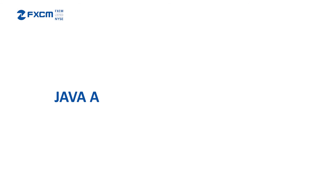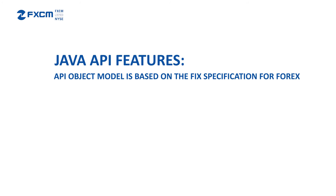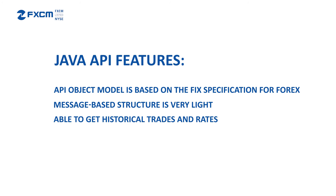The Java API is a scalable, light, and robust API for those looking to create either a client or server-side application. It also possesses the same data structure as FIX. The API object model is based on the FIX specification for Forex and is customized for trading with FXCM.